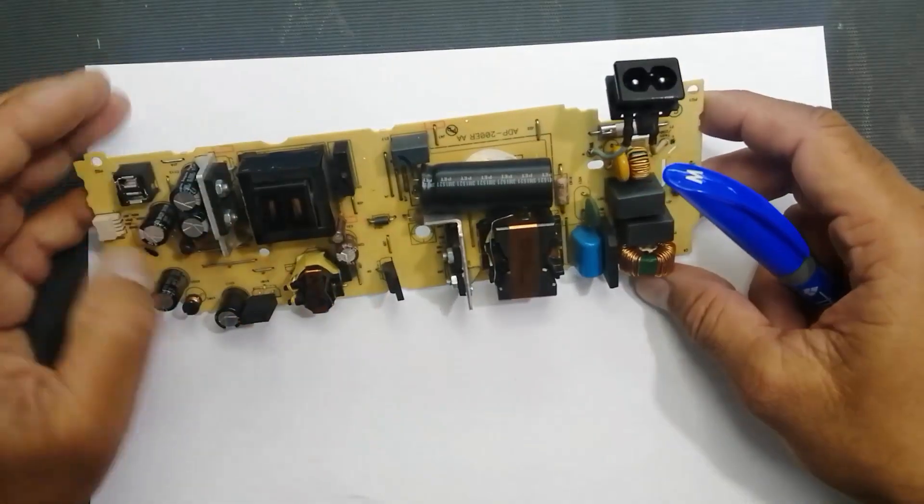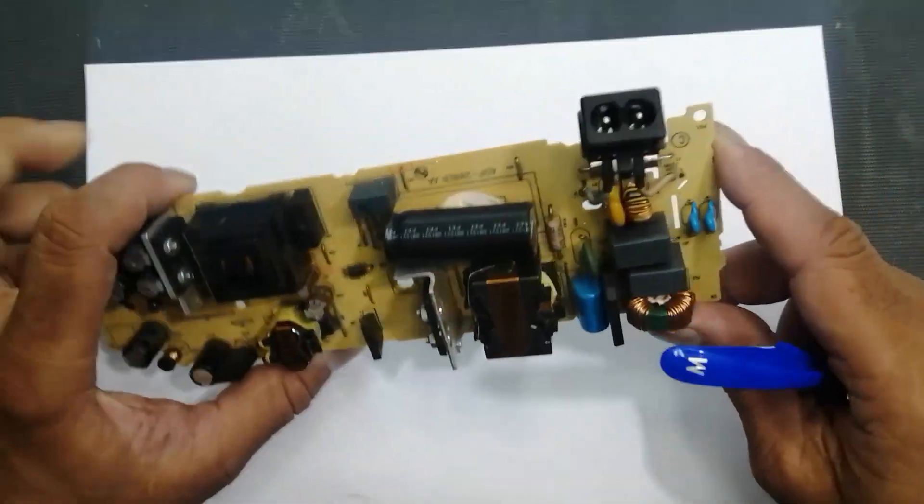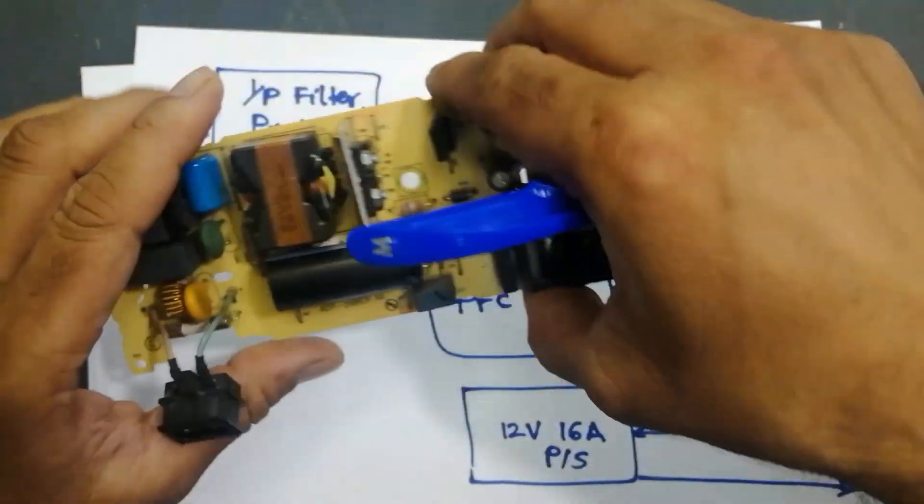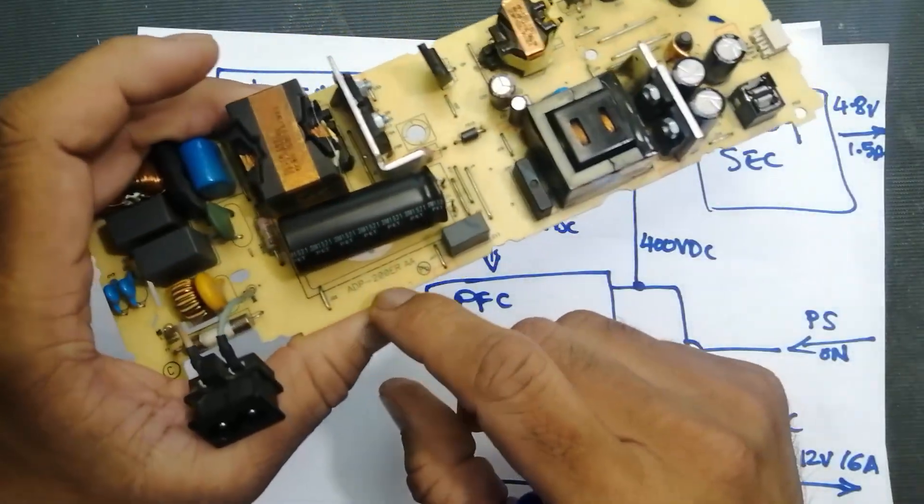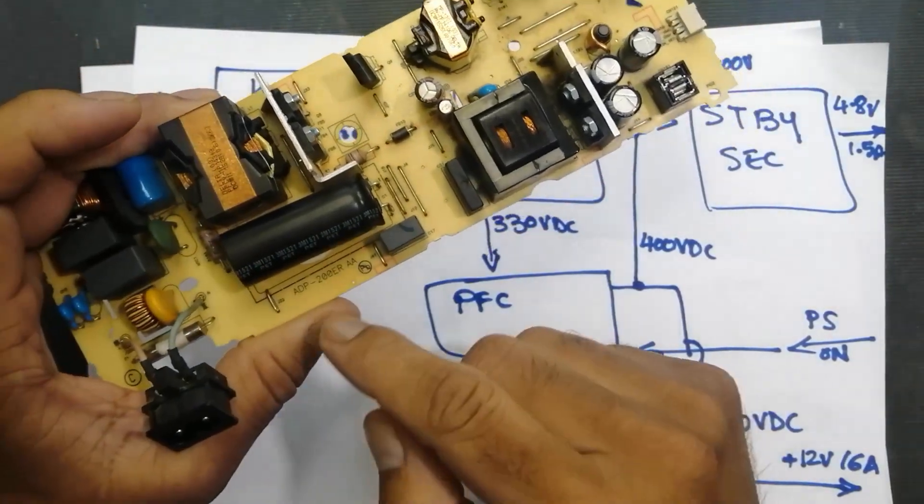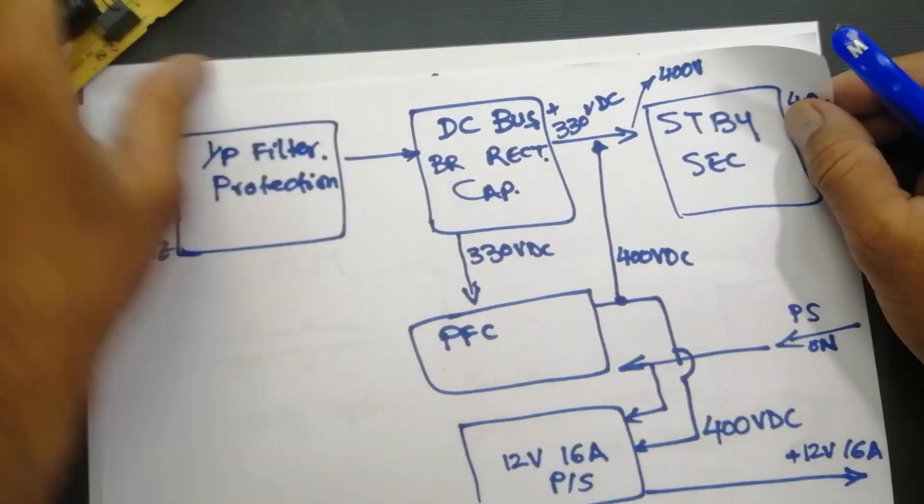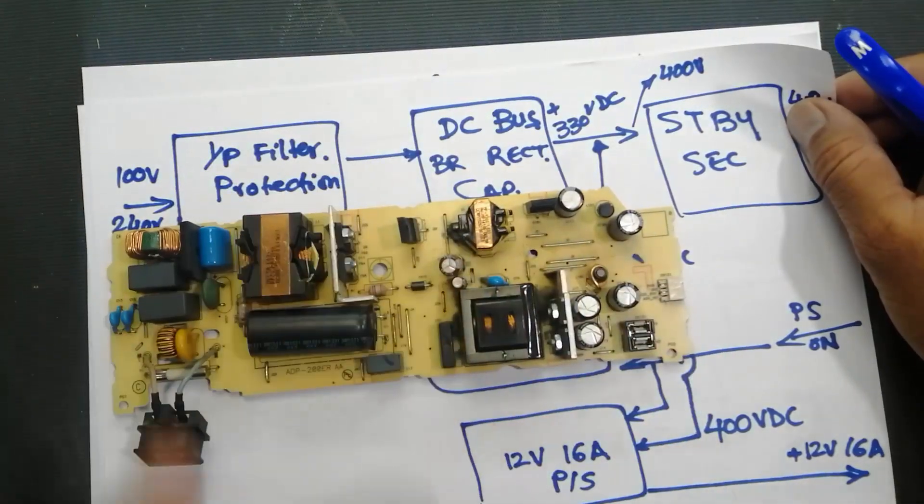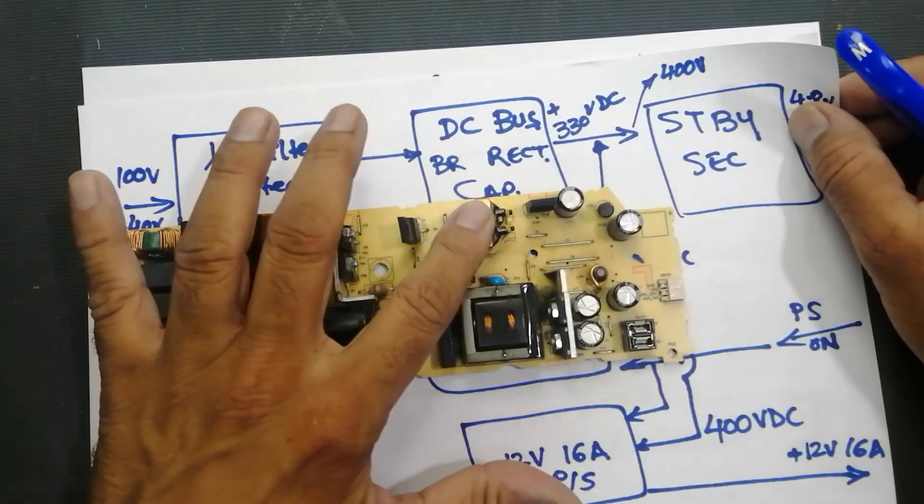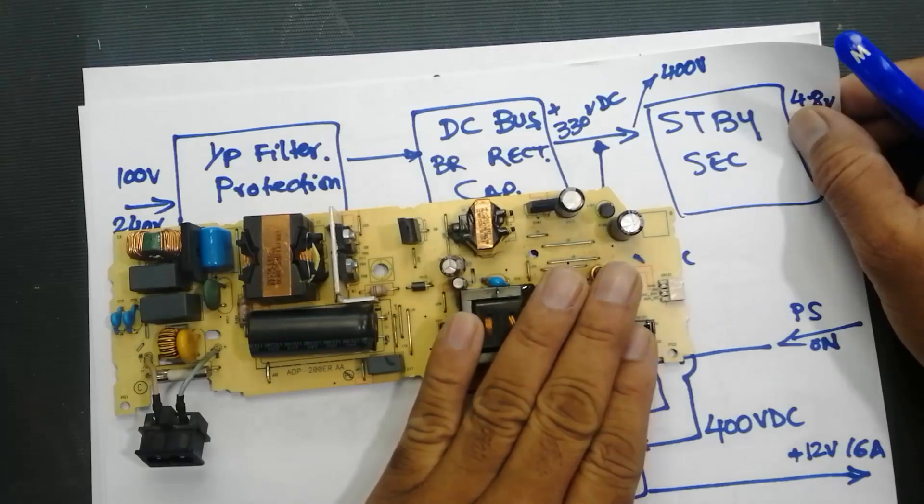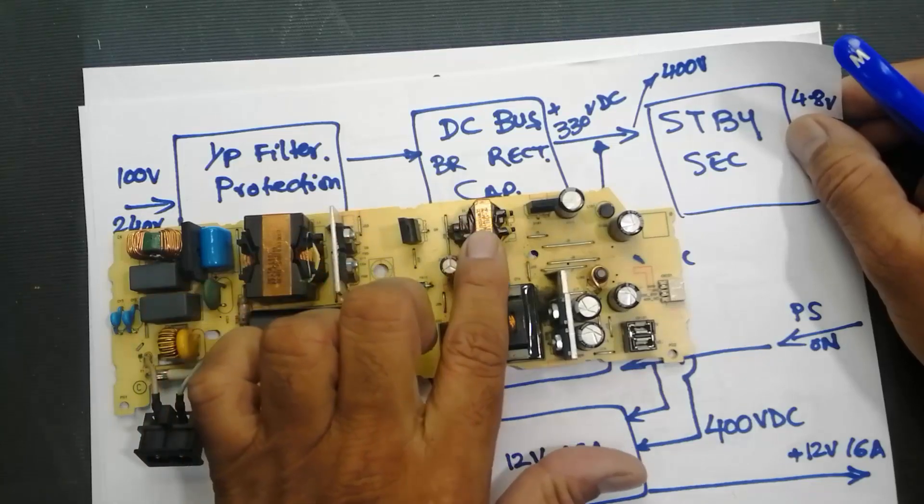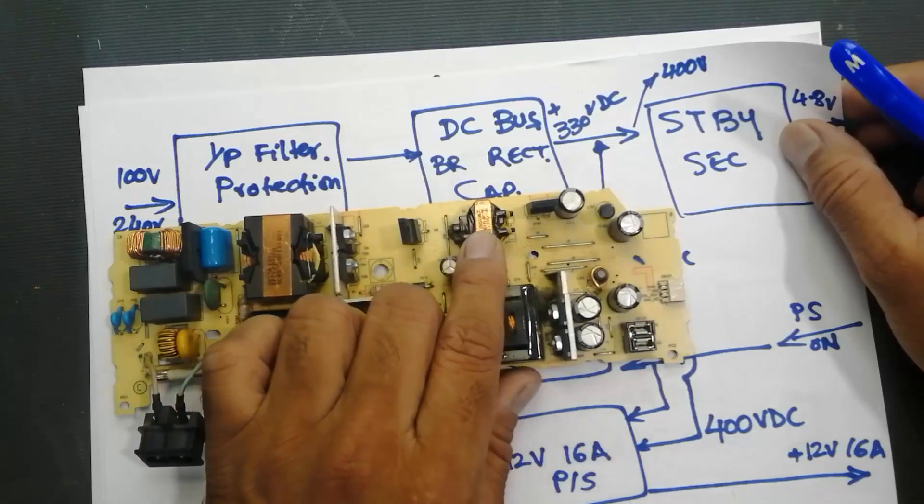Welcome back to Hasib Electronics. Friends, in the continuation of these videos for Sony ADP200ER, I discussed the configuration of this board: rectifier, PFC, standby and main power, 12V 16A, 4.7V 4.8V 1.5A.